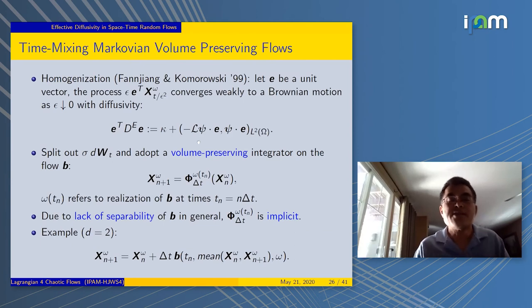Thanks to the time mixing, this corrector is actually stationary. If you don't have the time mixing, then this corrector may not be stationary. It could be worse. Now we're going to introduce a numerical scheme. Just like before, we want a volume-preserving scheme. The only additional difficulty is that previously we took advantage of separability. But in this case, in the stochastic case, there is no more separability in the velocity field in general.